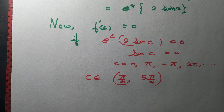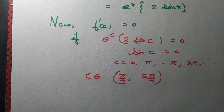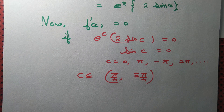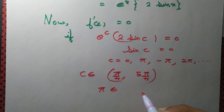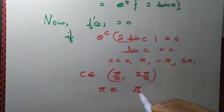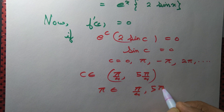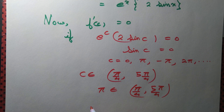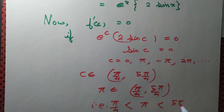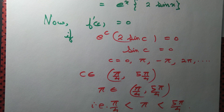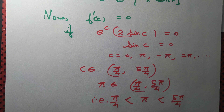We are lucky enough — in fact, Rolle's theorem guarantees us such a constant. Since π/4 < π < 5π/4, c = π lies in the open interval (π/4, 5π/4), and we have found such a constant. This verifies Rolle's theorem.